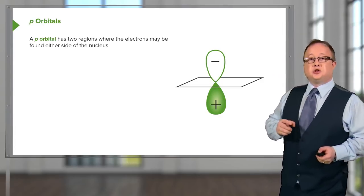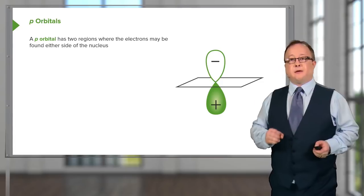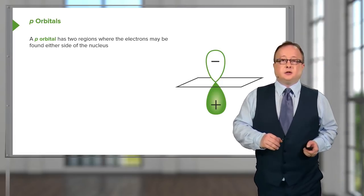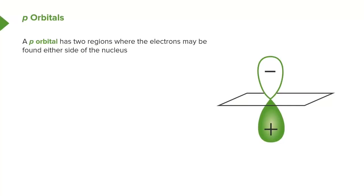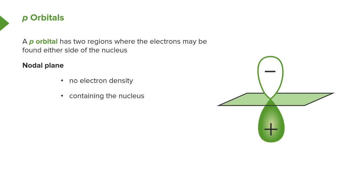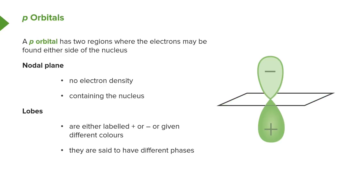A P-orbital has two regions where electrons may be found on either side. There's a plane through the node of the P-orbital, and along that plane there exists no electron density, as it contains the nucleus. But again, what is the significance of the negative and the positive charge regions? This is to do with the phase of electrons.